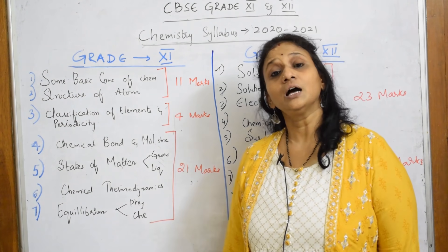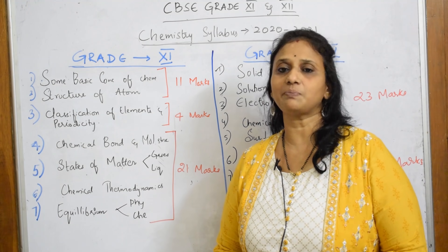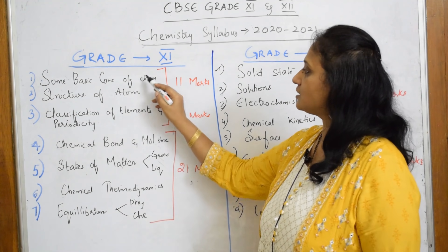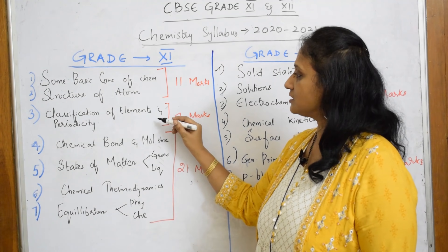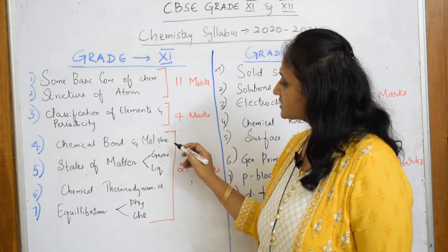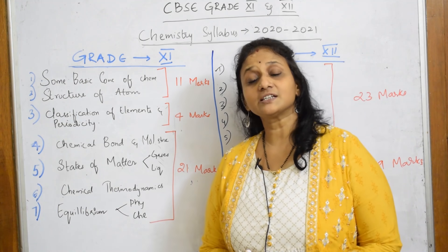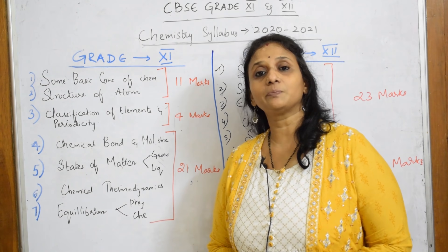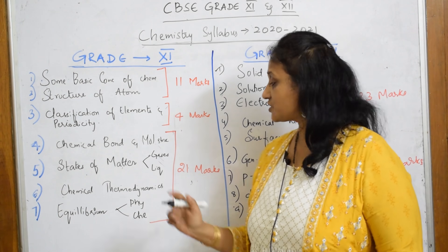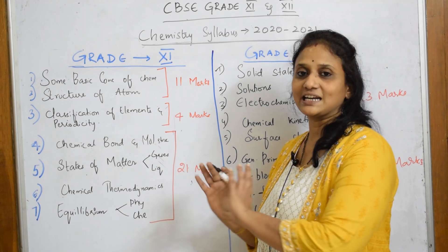That is the NCERT grade 11 Part 1 book. The first two chapters carry 11 marks, the third chapter carries four marks, and chapters four through seven together come up to 21 marks — that is the Part 1 book of NCERT for grade 11, totaling 21 marks for that section.